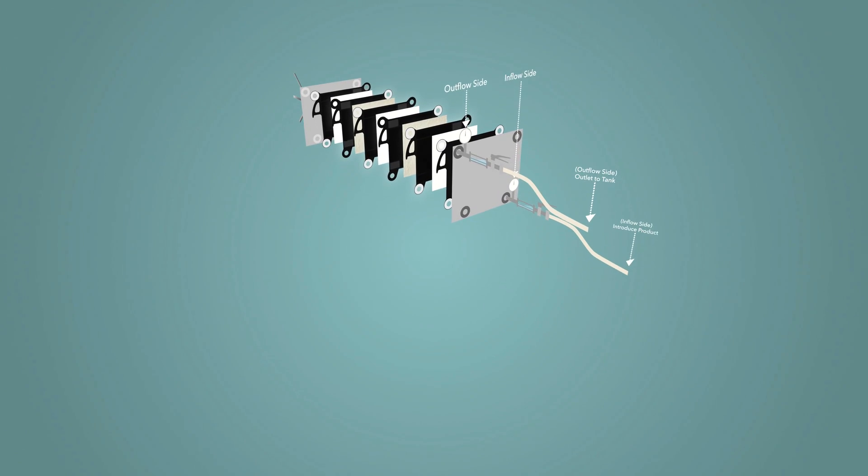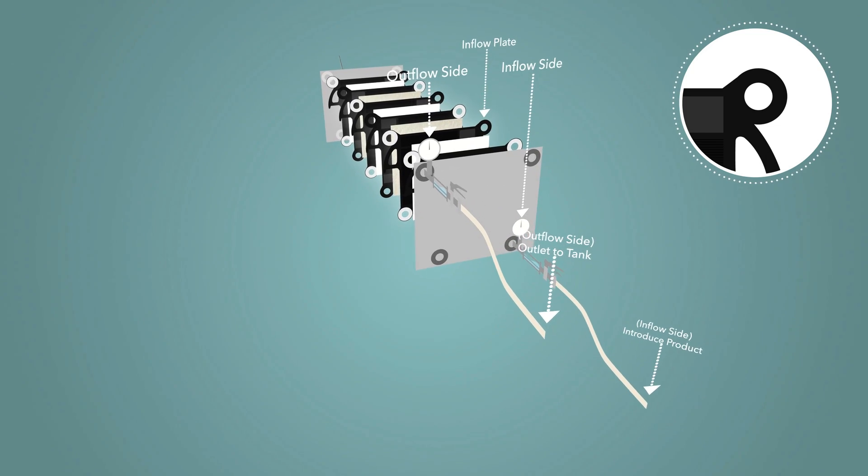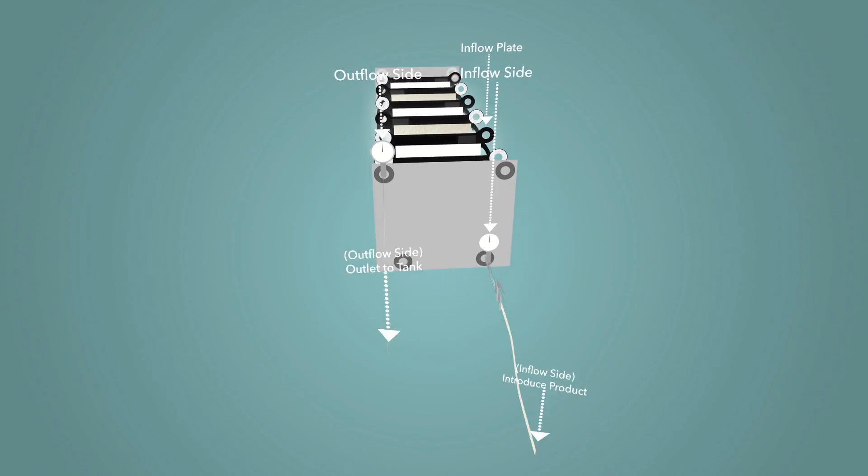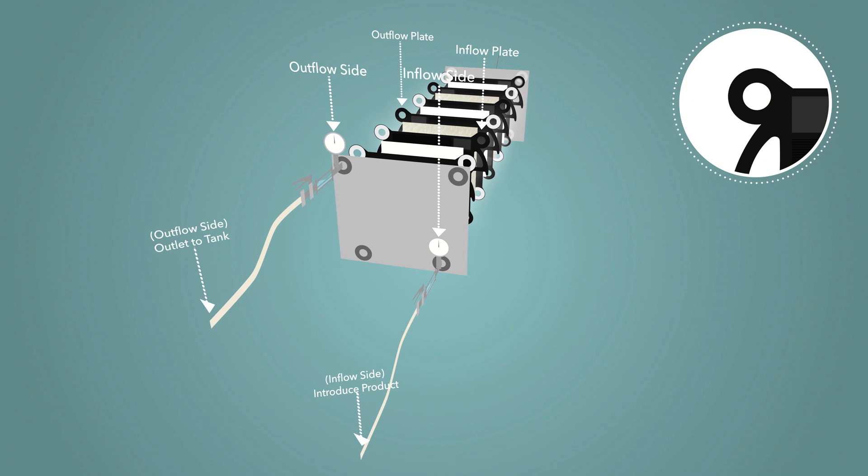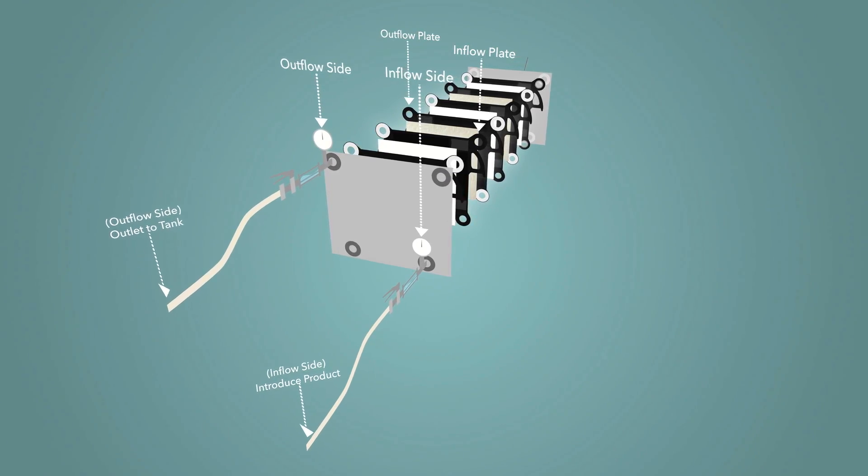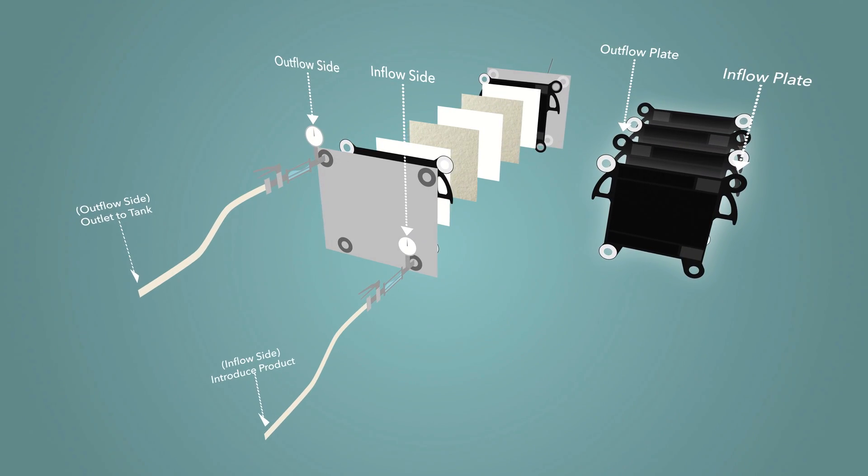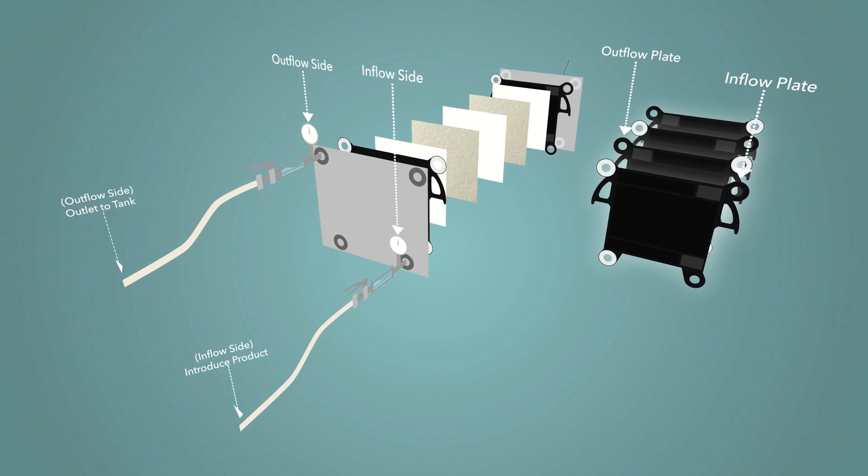If the ear of the plate without the gasket is oriented on the inflow side of the machine, this plate is considered an inflow plate. If the ear without a gasket is on the outflow side, this is considered to be an outflow plate. When inserting intermediate plates into the filter, alternate directions so that the plates properly gasket against each other.